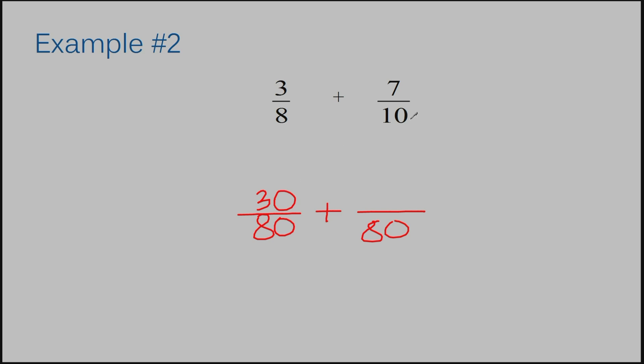And the same thing happens over here. We multiplied the ten by eight to get this eighty. So, I have to multiply my numerator also by eight. So, seven times eight is fifty-six. Now, I can add. If you remember before, the denominator always stays the same. So, I went ahead and wrote it in. Now, I'm going to add my numerators. I have thirty plus fifty-six. That's eighty-six.